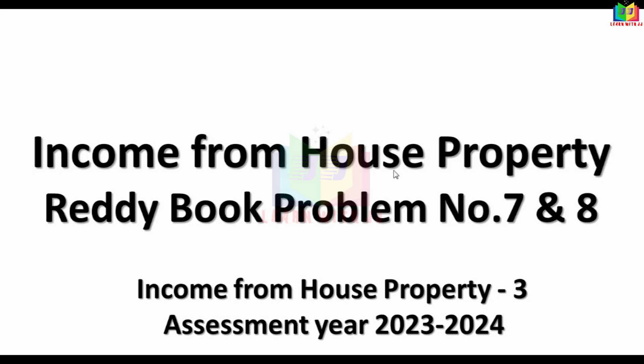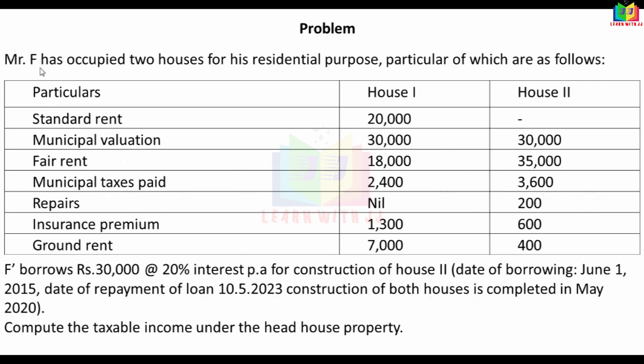Welcome to our video on Income from House Property. Ready Book comprehensive problem number 7 and 8. Mr. F has occupied two houses for his residential purpose, particulars of which are as follows.